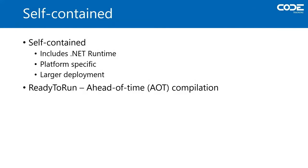Let's get down to some specifics. I'm going to demonstrate how to publish a desktop application directly through Visual Studio. This is actually quite simple, but there are a few options you should be aware of: self-contained and framework-dependent. Self-contained deployments include everything the application needs in order to run, including the required .NET runtime. Self-contained installations are platform-specific — the .NET runtime included in the installation will determine the operating system on which the application can run. You can select Windows, Mac, or Linux, but the application will only run on the chosen platform.